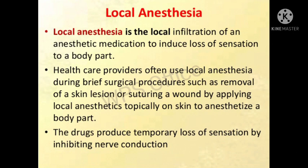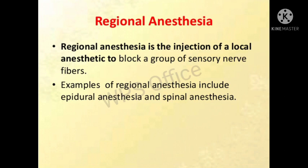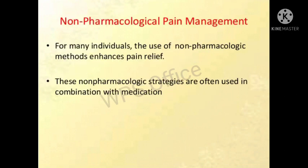In local anesthesia, it is a local infiltration of an anesthetic medication to induce a loss of sensation to a body part, and it can be used to suppress pain. Regional anesthesia is an injection of a local anesthetic to block a group of sensory fibers, given to a particular area to block sensory nerves and decrease pain.